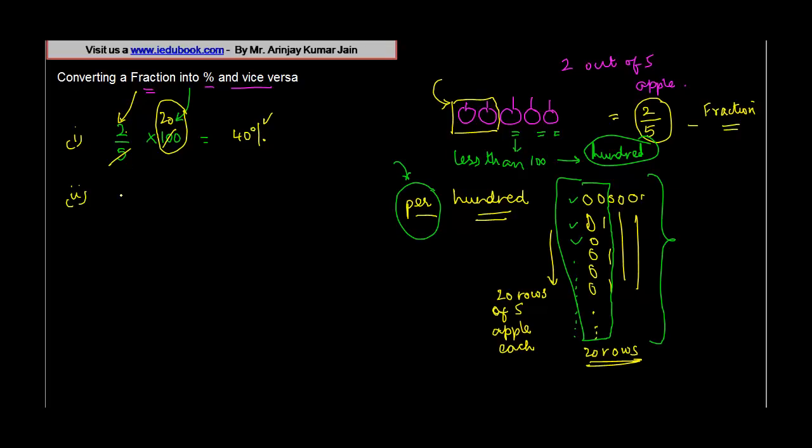So let's say you had a fraction three by twelve. So what do we do? We just multiply it by hundred. Three will go into twelve how many times? Four times. Four will go into hundred how many times? Twenty five times. So twenty five percent.